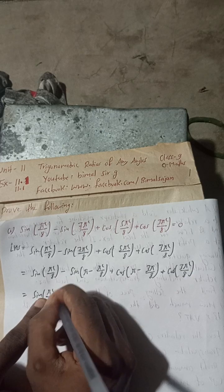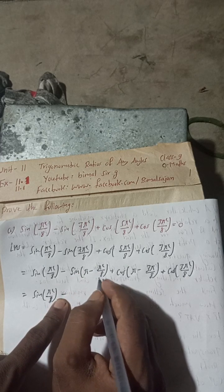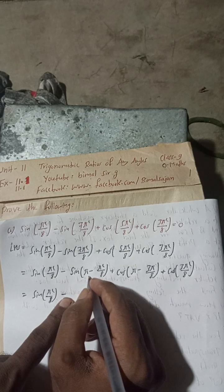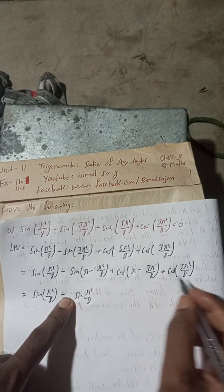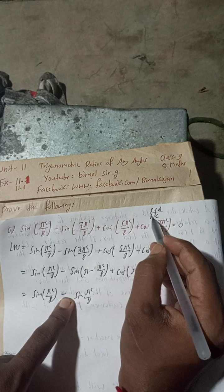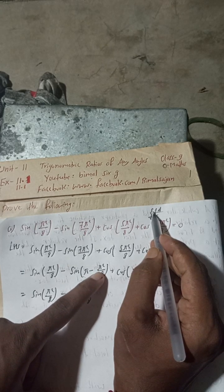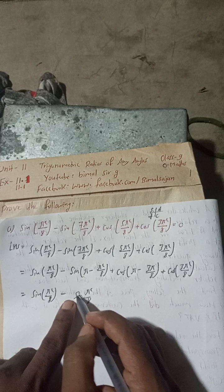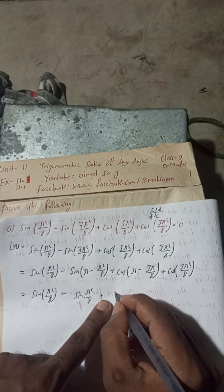Now, sin(π − π/8) — here π means 180°, so this is of the form sin(180° − θ), which places it in the second quadrant. In the second quadrant, sine and cosec are positive, so sin(π − π/8) = +sin(π/8). Similarly, cos(π − 3π/8) is also in the second quadrant.